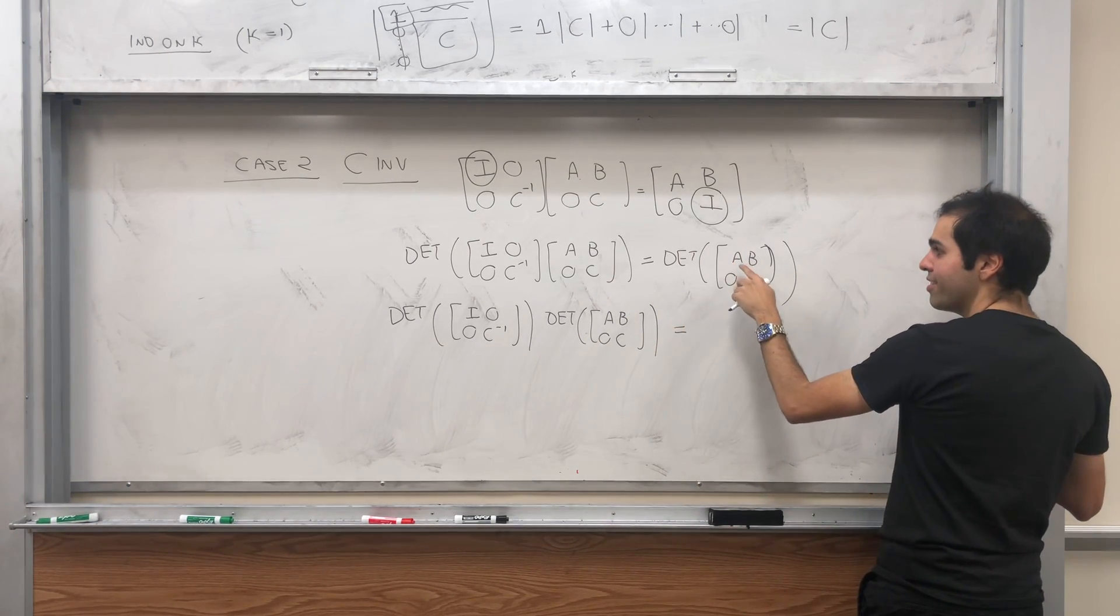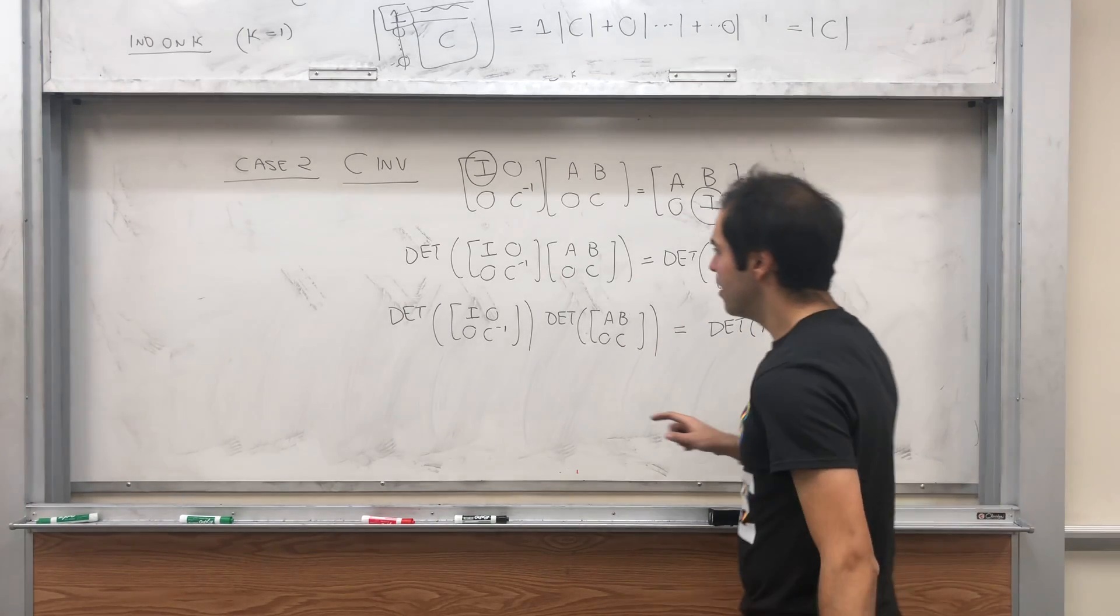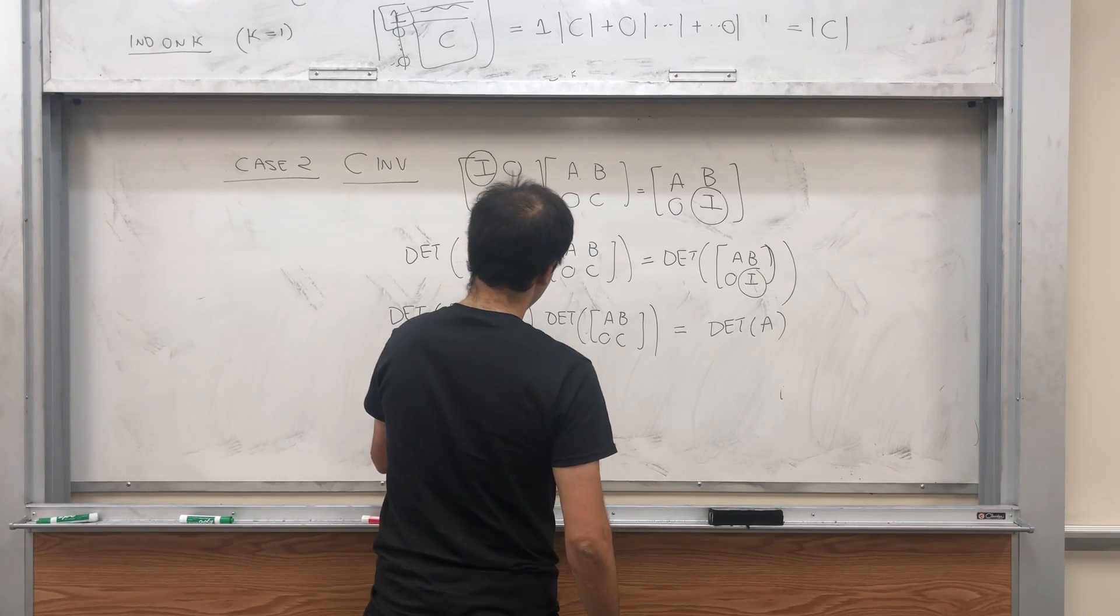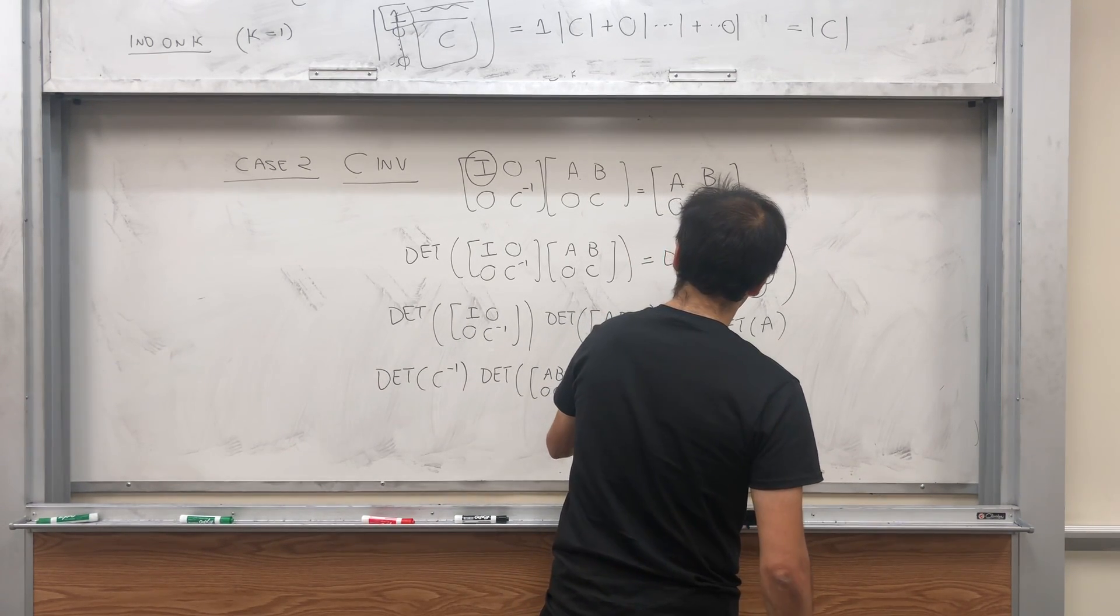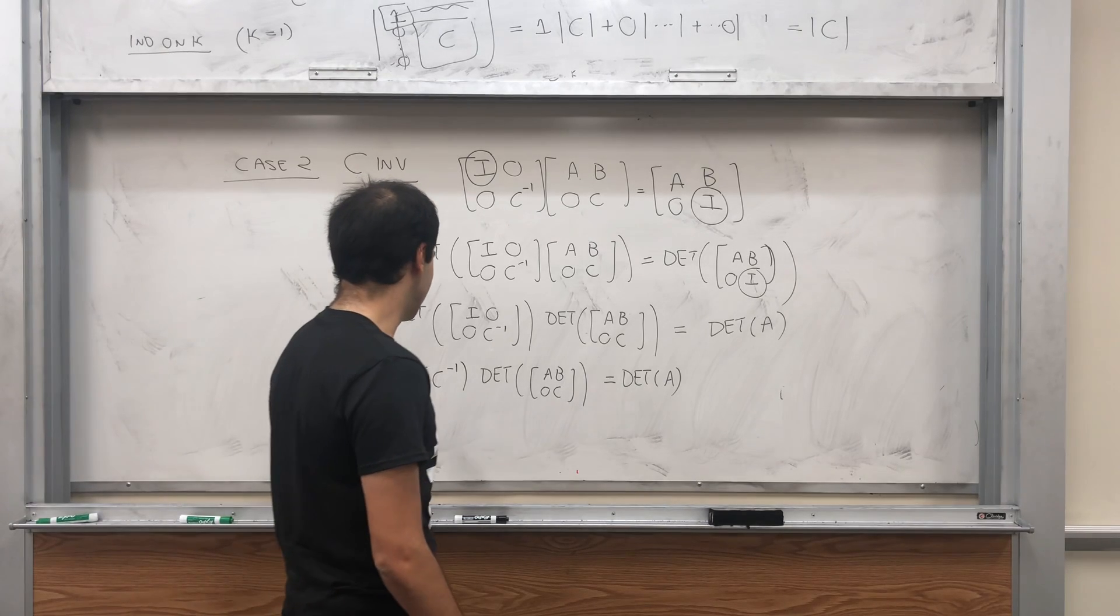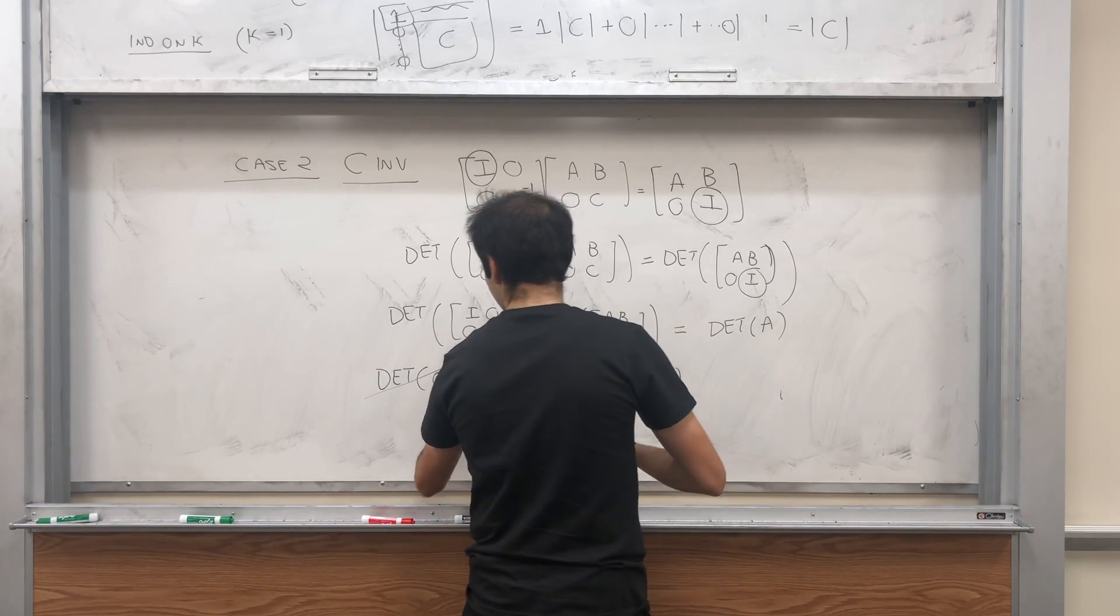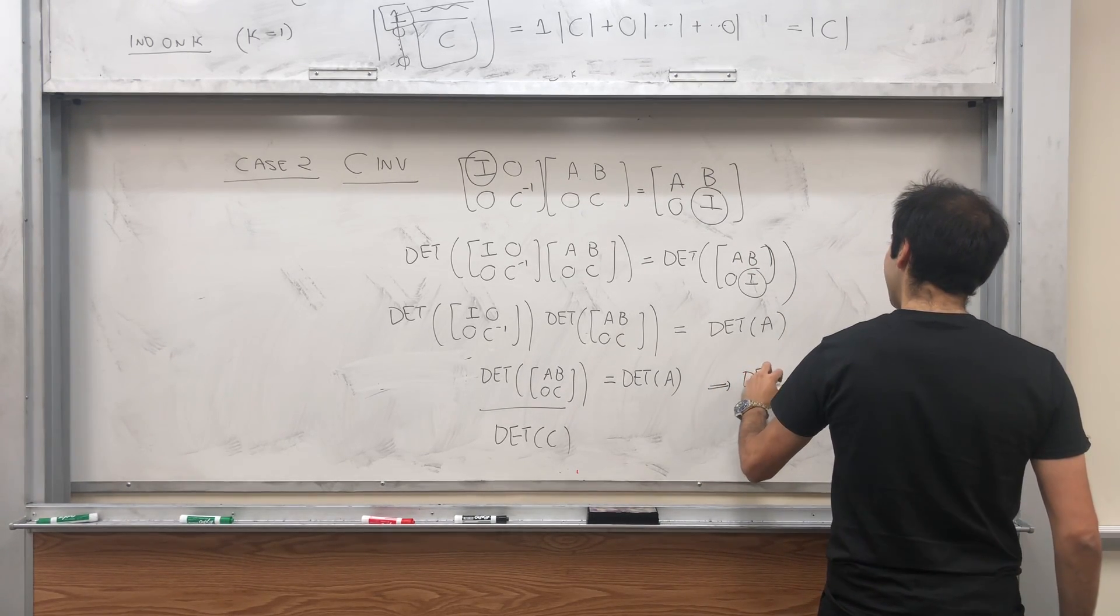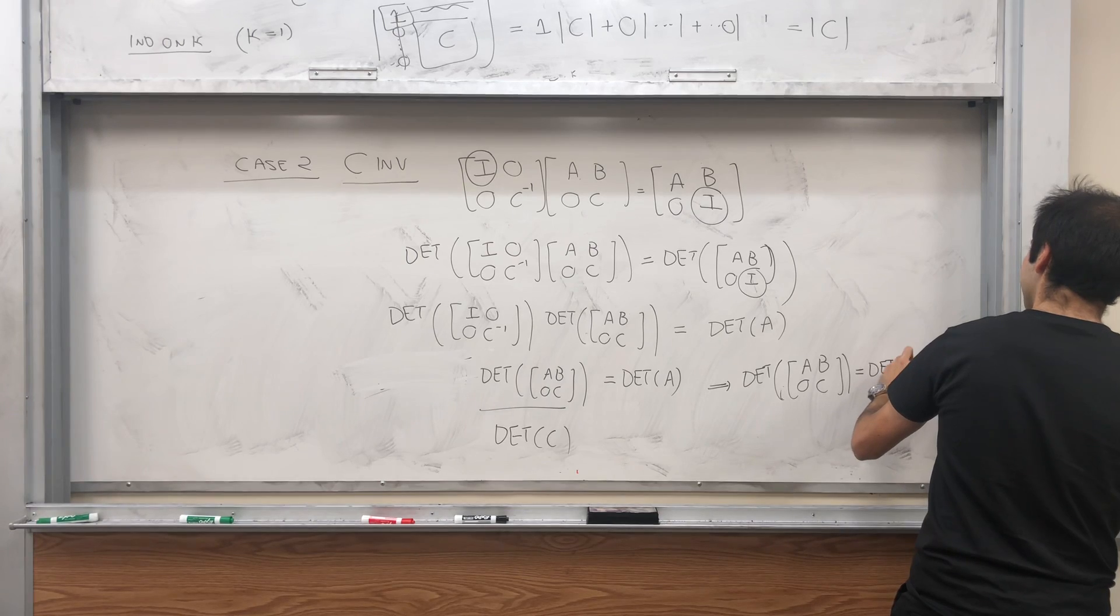Now we know that, again by one of the cases, this gives you precisely what we want: determinant of A. This also gives us precisely what we want, so determinant of C^{-1} times determinant of [[A, B], [0, C]], and that's the determinant of A. But determinant of C^{-1} is just 1 over the determinant of C. Okay, C is invertible so this is fine. And then just cross-multiplying we get our desired result! The determinant of [[A, B], [0, C]] is the determinant of A times the determinant of C.